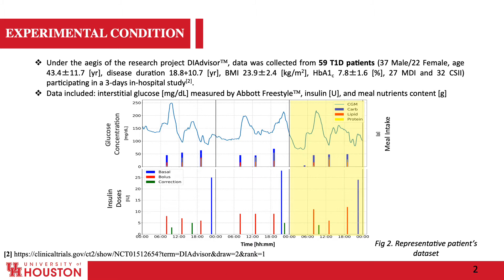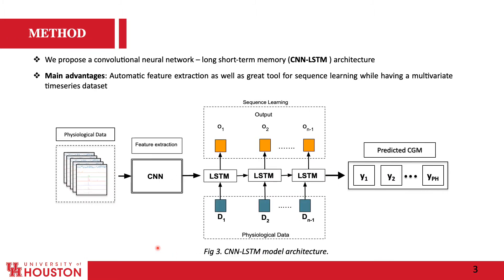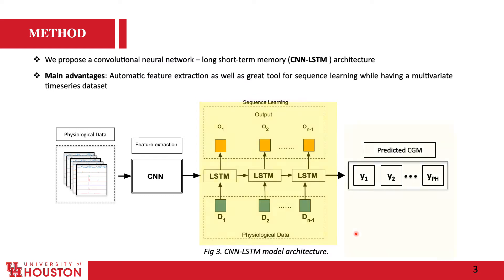This is our proposed CNN-LSTM model. First, the data is divided into train and test sets in a patient-wise manner. Then the training set is divided into segments with equal length and fed to the model. The CNN section automatically extracts significant features from the dataset, and the LSTM part performs sequence learning — that is, learning the patterns and relationships between variables.